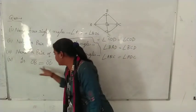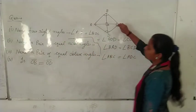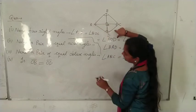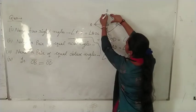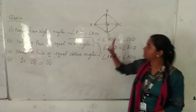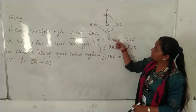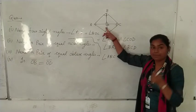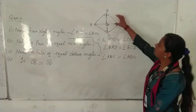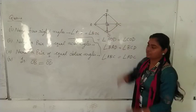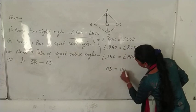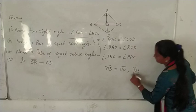Last, is OB equal to OD? We have checked. In a rhombus, we have two diagonals AC and BD which intersect at 90 degrees and bisect each other. Bisect means they cut each other equally, meaning OB equals OD and OA equals OC. So also, OB equals OD. Yes, it is right.